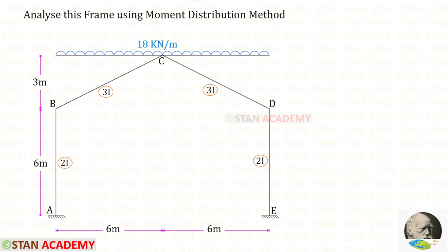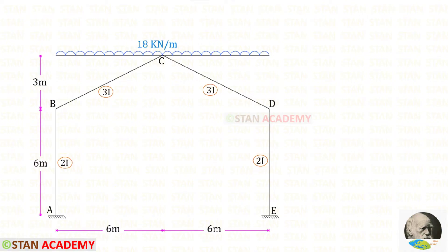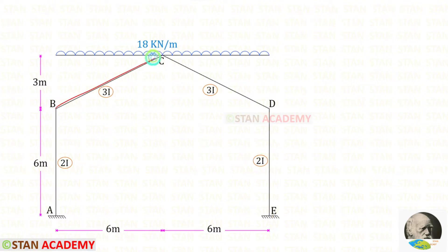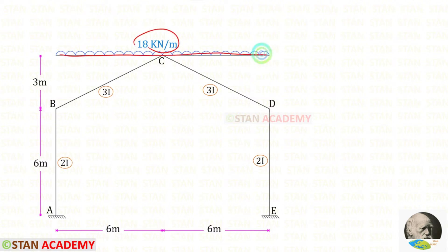Hello everyone. Today we are going to analyze this gable frame using the moment distribution method. This is a symmetrical frame. In this frame we have different moments of inertia. For the vertical members AB and DE, the moment of inertia is 2I. For the inclined members BC and CD, it is 3I. Above the frame we have a uniformly distributed load of 18 kilonewton per meter, acting for the full span of the frame.